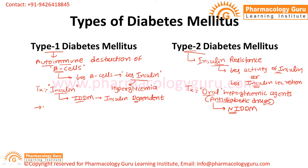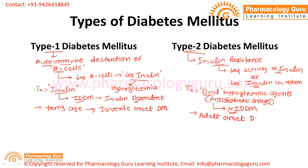Type 1 diabetes generally occurs in young age or in children, so it is also known as juvenile onset diabetes mellitus. While Type 2 diabetes mellitus generally occurs after the age of 45, and that is why it is known as adult onset or maturity onset diabetes mellitus. Around 5 to 10 percent of patients have Type 1, while the majority — 90 to 95 percent — have Type 2 diabetes mellitus.